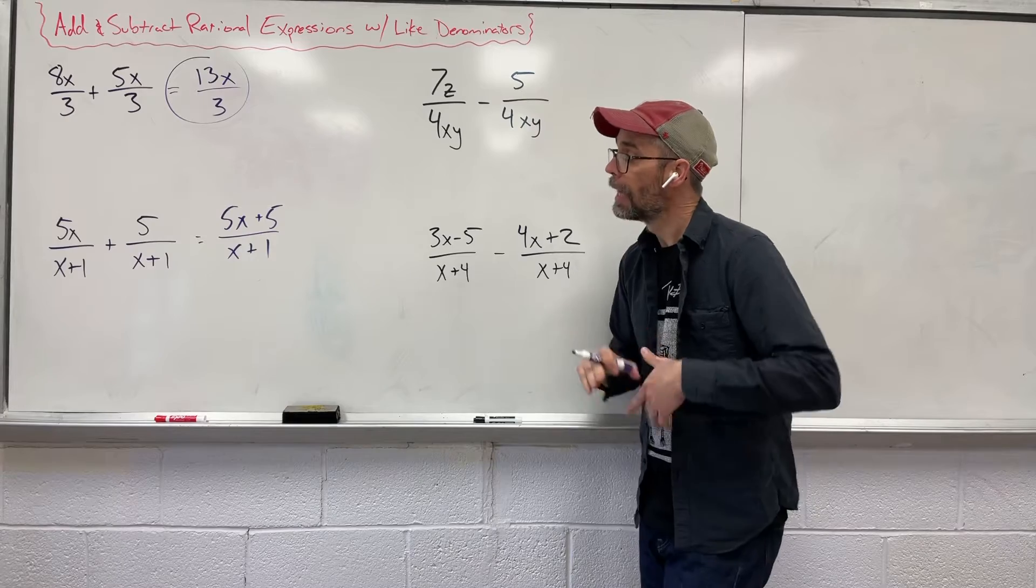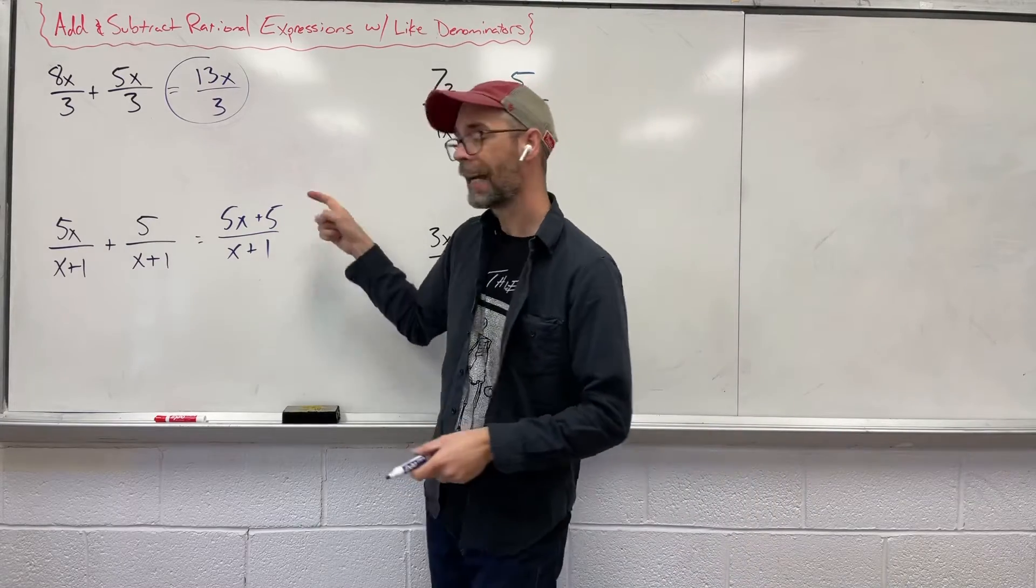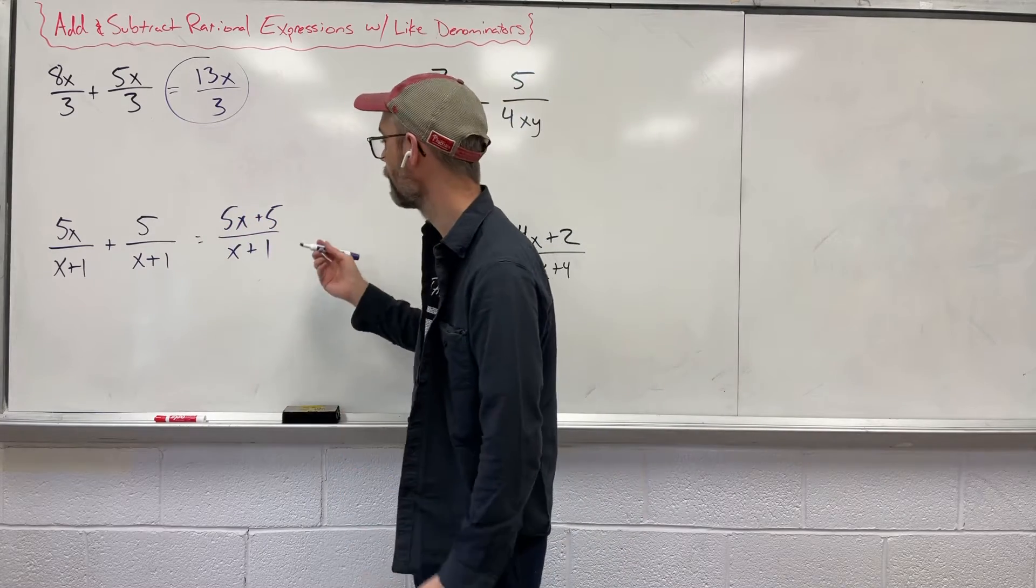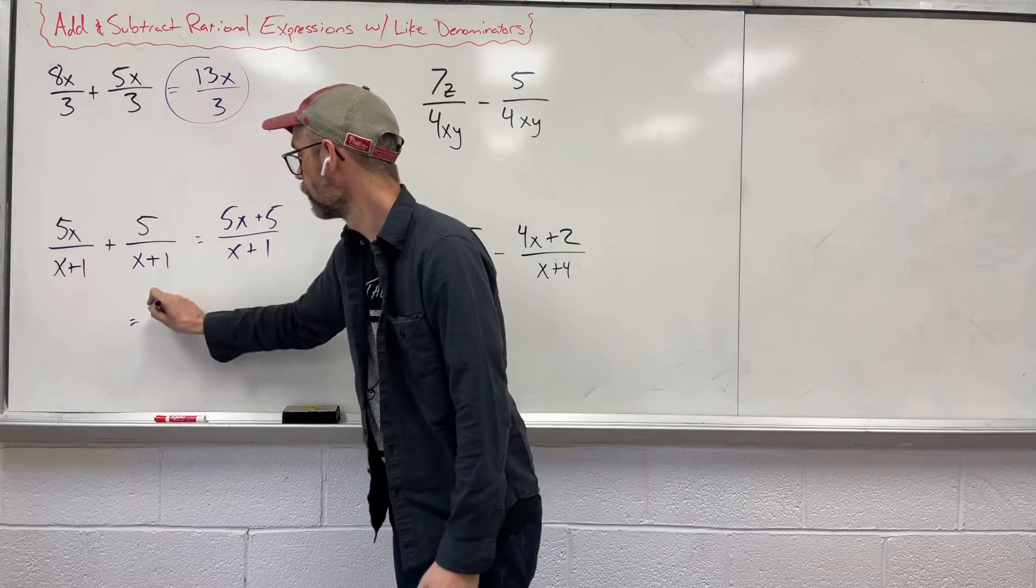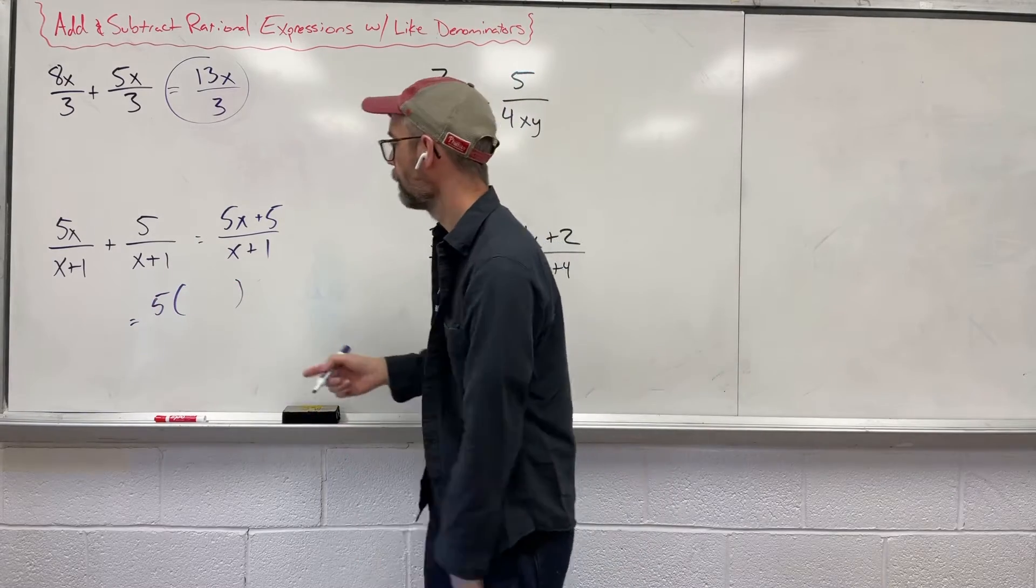Now, can you simplify? Well, up top, I can factor out something. They both share a 5. I want to pull a 5 out. And I want to undistribute this. I want to factor it.